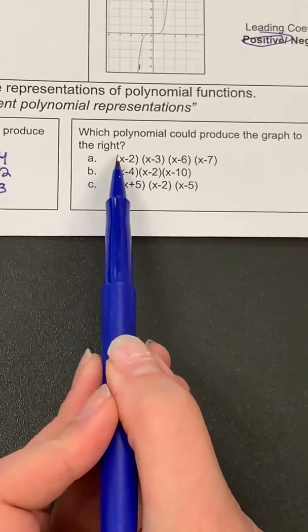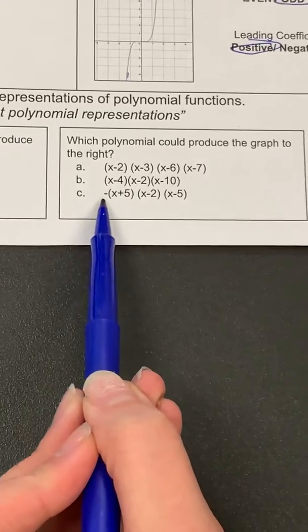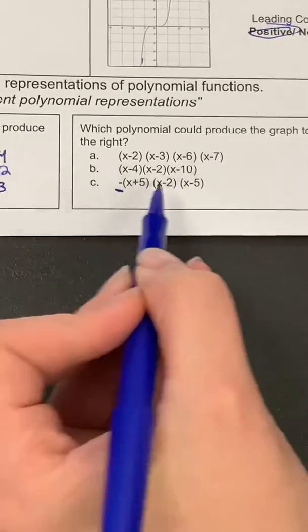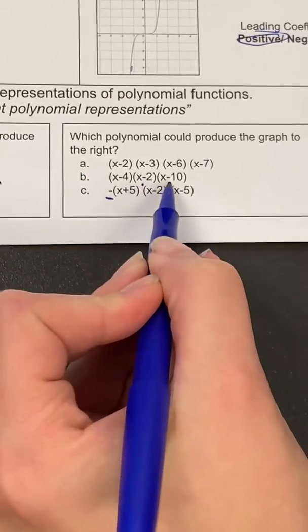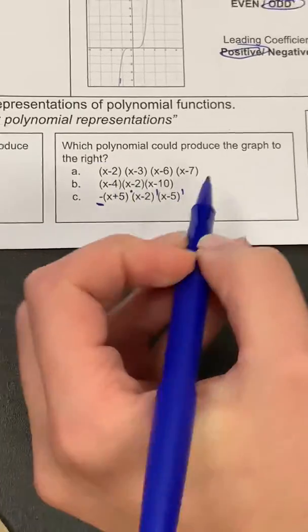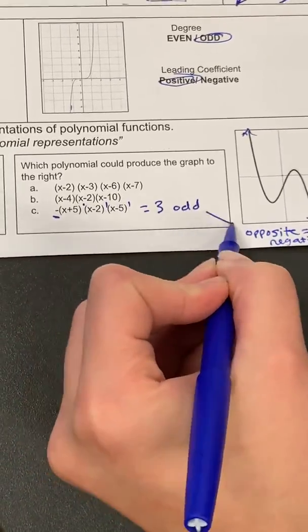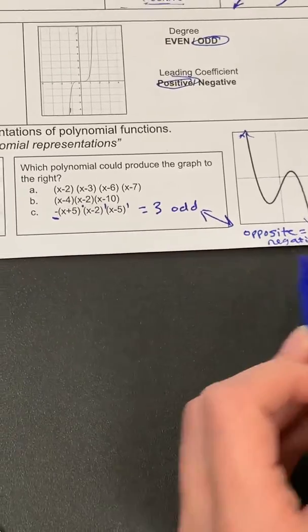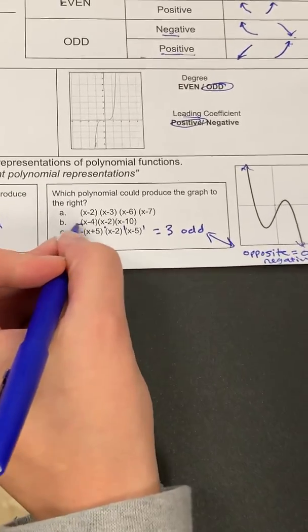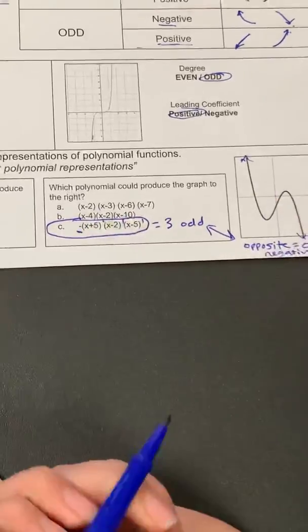Well, I actually see that only one of these has a negative out front. And if you add up the exponents, it's going to be a one, a one, and a one. One plus one plus one equals three. And that's odd. So that actually matches my description of opposite and odd. So this is going to be the equation that matches my function.